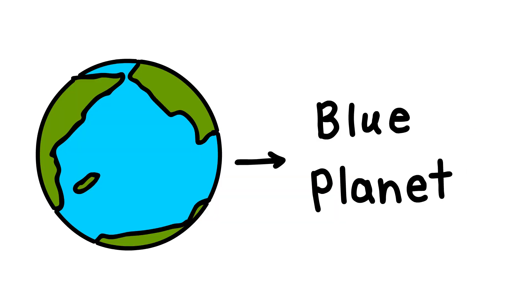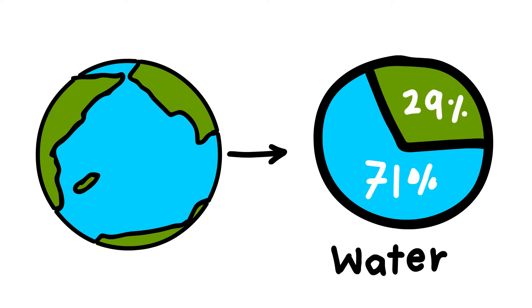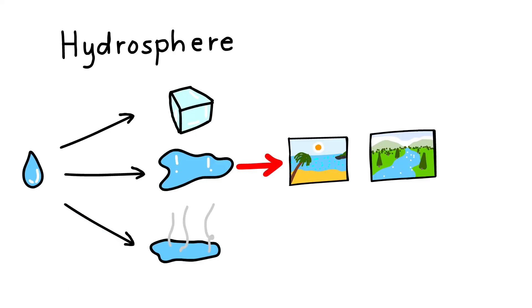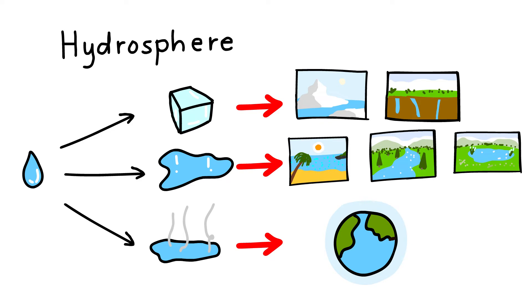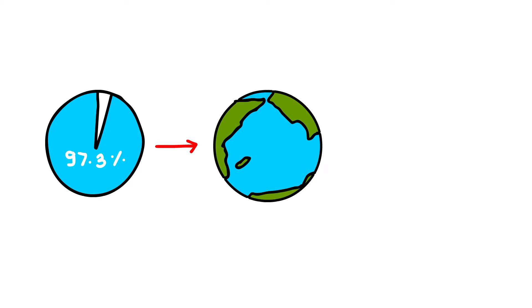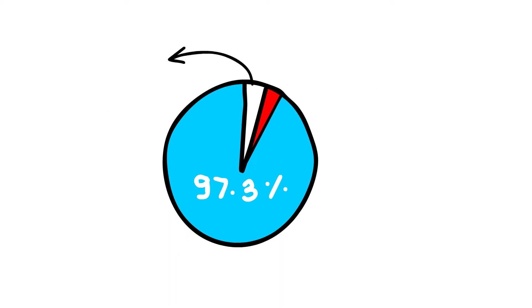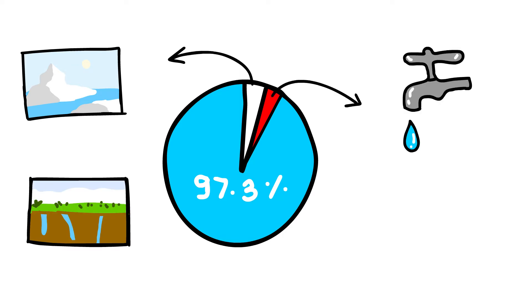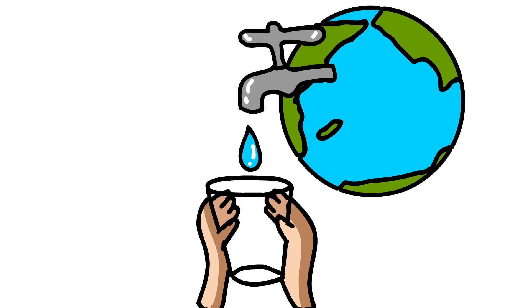Hydrosphere. The Earth is called the Blue Planet. More than 71% of the Earth is covered with water, and 29% is land. The hydrosphere consists of water in all its forms — running water in oceans, rivers and lakes, ice in glaciers, underground water, and water vapor in the atmosphere. More than 97% of the Earth's water is found in the oceans and is too salty for human use. A large proportion of the rest is in the form of ice sheets and glaciers, and only a very small percentage is available as fresh water for human use. Hence, despite being a blue planet, we face a shortage of water.